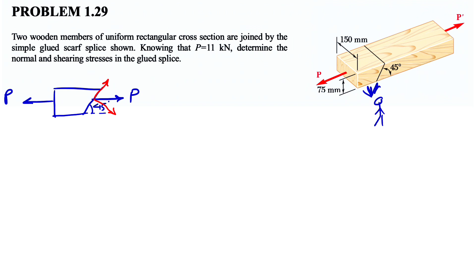Since we know the angle is 45 degrees, this angle right here would be 45 degrees too. So this force would be P cosine of 45 degrees, and the other one would be P sine of 45 degrees. So basically, what we did so far is to resolve our P into perpendicular and parallel components of the surface that we have in here.